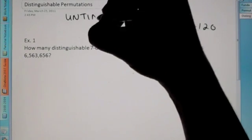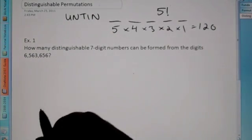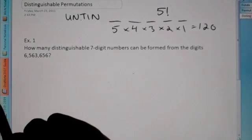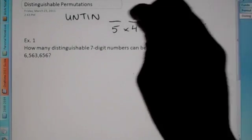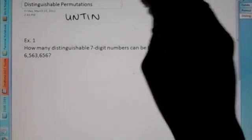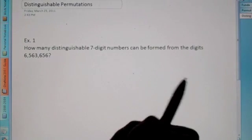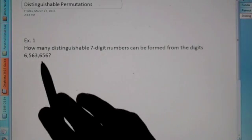So if I put U-N-T-I-N, that changes the situation, because now we have two Ns. So what do we do in that case? Those are called distinguishable permutations, when we have the same thing twice.